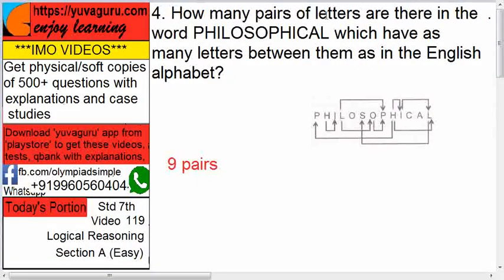How many pairs of letters are there in the word philosophical which have as many letters between them as in the English alphabet? What does it mean? It means I and L.